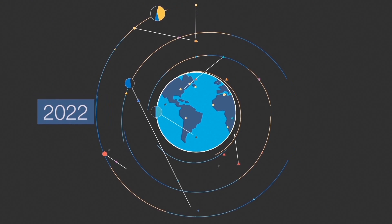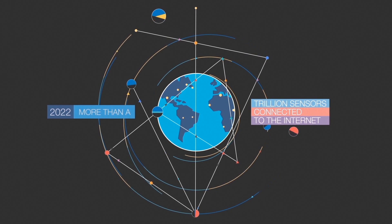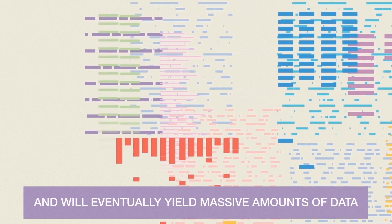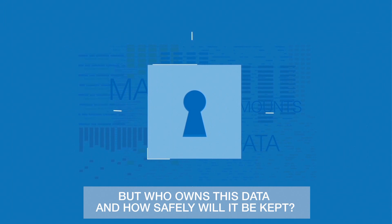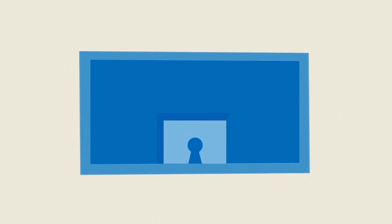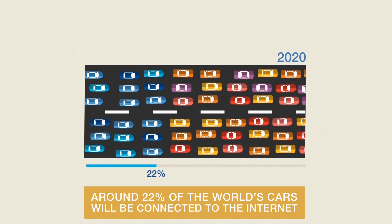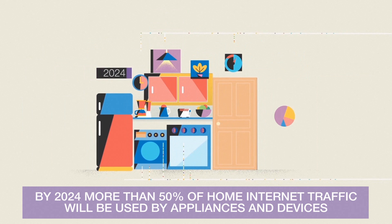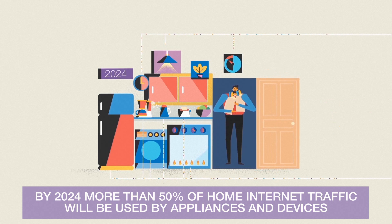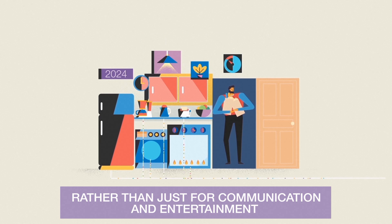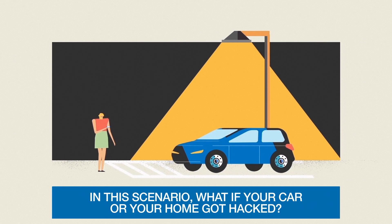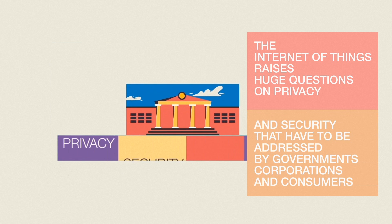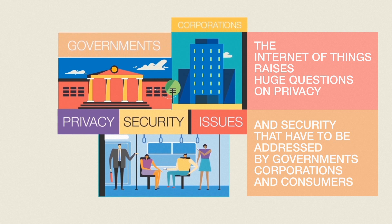By 2022 it is expected that more than a trillion sensors will be connected to the internet. If all things are connected, it will shift the way we do business and use resources, and will eventually yield massive amounts of data. But who owns this data, and how safely will it be kept? By 2020, around 22% of the world's cars will be connected to the internet — that's 290 million vehicles. And by 2024, more than 50% of home internet traffic will be used by appliances and devices, rather than just for communication and entertainment. The internet of things raises huge questions on privacy and security that have to be addressed by governments, corporations, and consumers.